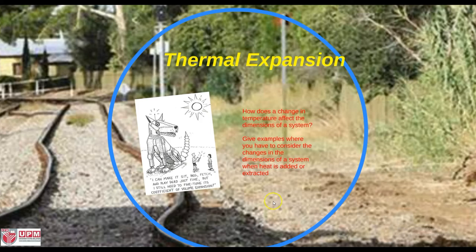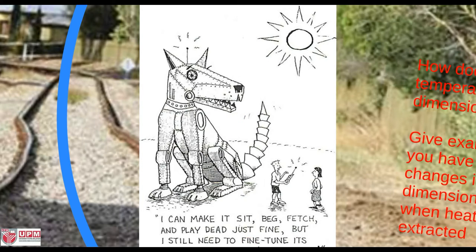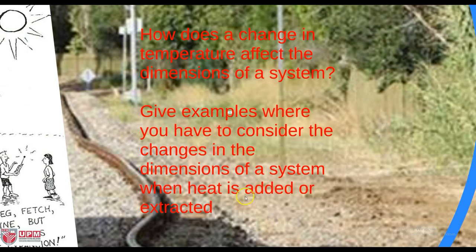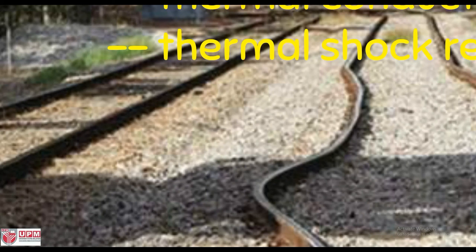Most solids expand upon heating, and this property is called thermal expansion of solids. The question is how temperature affects the dimensions of metals. For example, imagine you have an iron disk with a hole in it that is heated — what will happen to this disk? Will the diameter of the hole increase, decrease, or not change? Basically, when you heat up this disk, the diameter of the disk will increase.